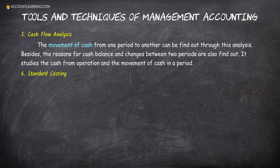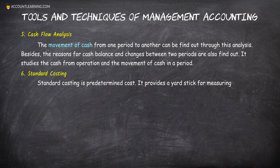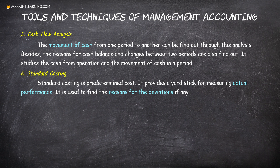6. Standard Costing. Standard costing is predetermined cost. It provides a yardstick for measuring actual performance. It is used to find the reasons for the deviations, if any.